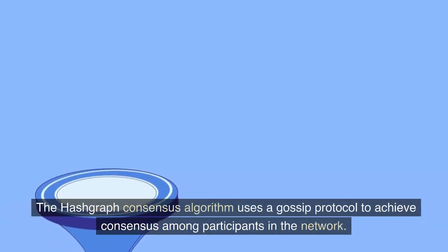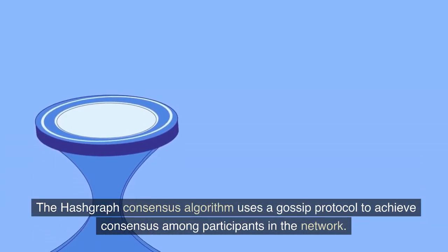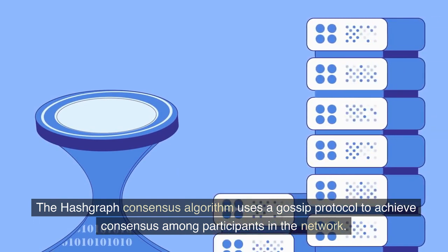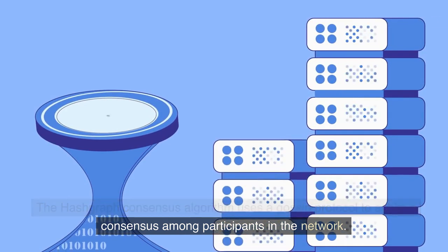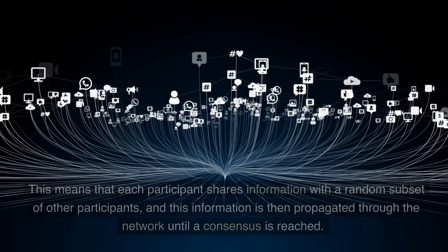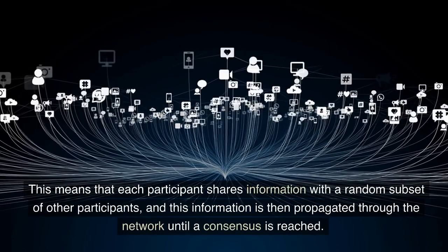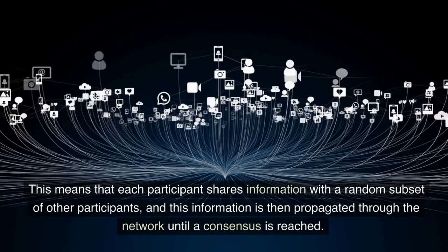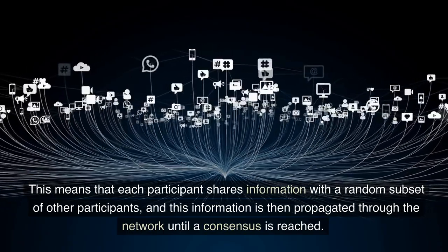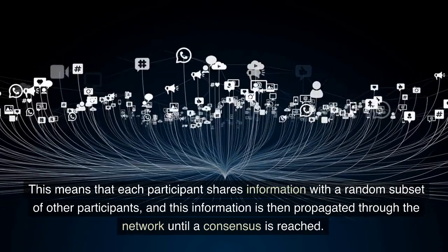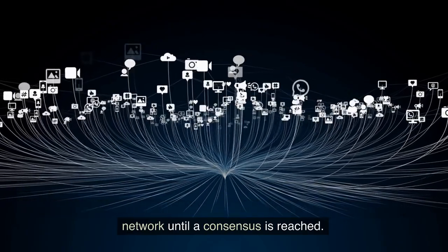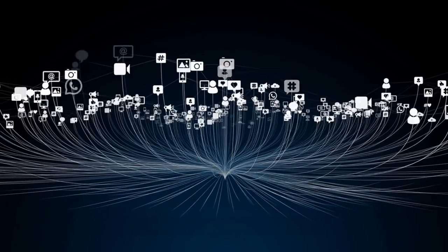The Hashgraph consensus algorithm uses a gossip protocol to achieve consensus among participants in the network. This means that each participant shares information with a random subset of other participants, and this information is then propagated through the network until a consensus is reached.